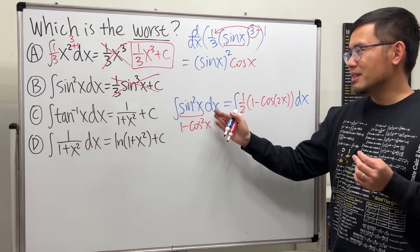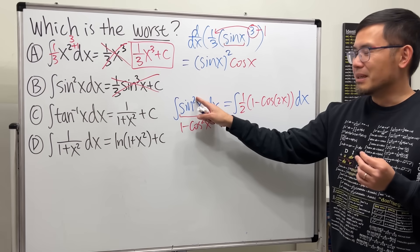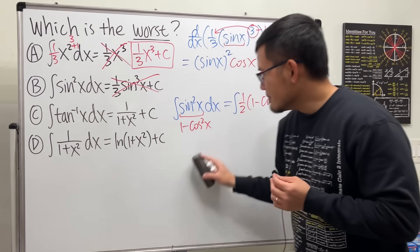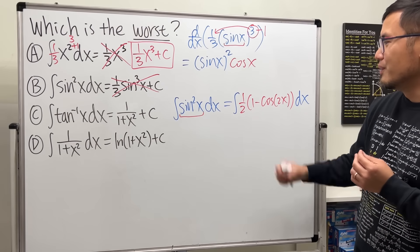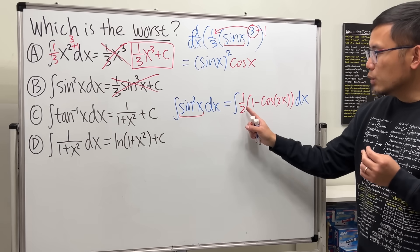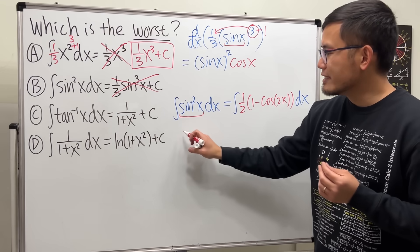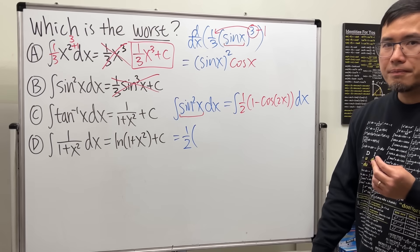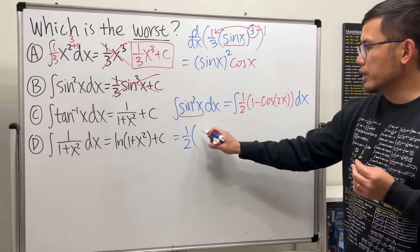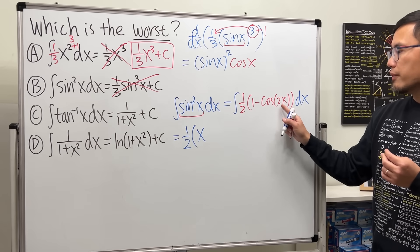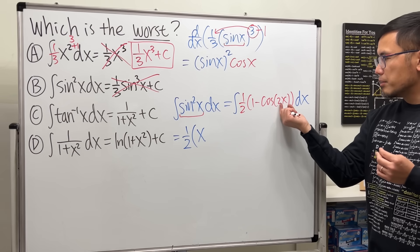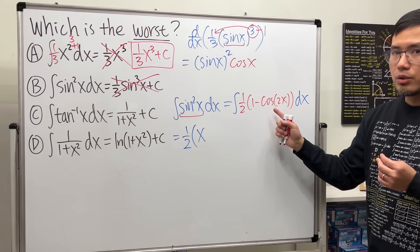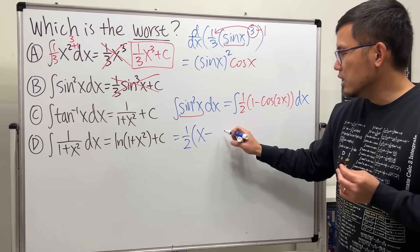This identity — which is on my shirt — brings the power down to one, and that's the key. This is the power reduction identity for sin²x. The one half is a constant multiple, so pull it out front. Integrate 1 to get x, then integrate negative cos(2x): the antiderivative of negative cosine is negative sine, so we get negative sine.